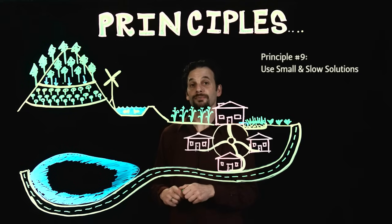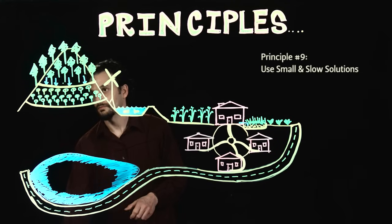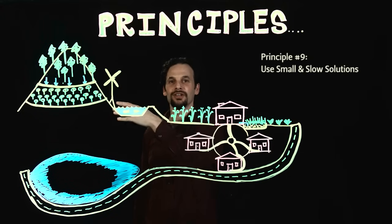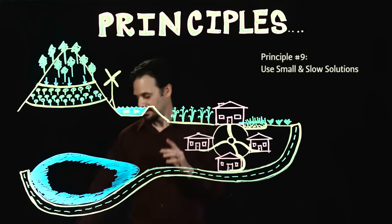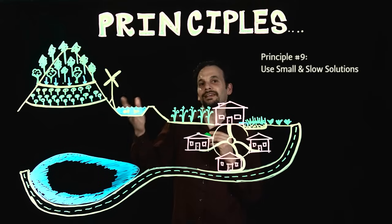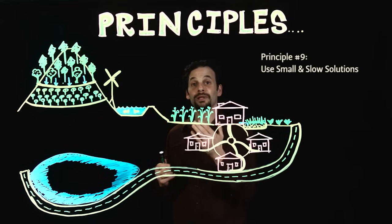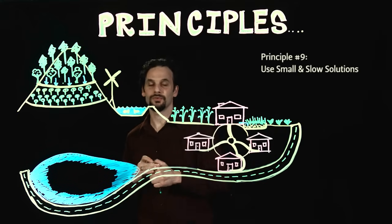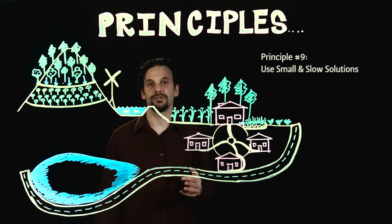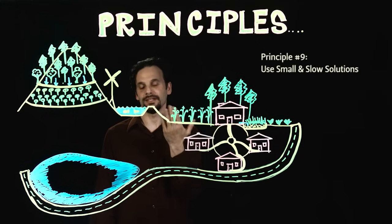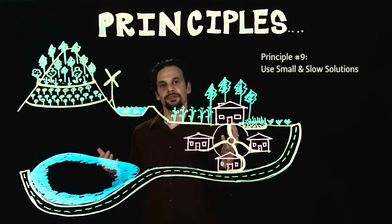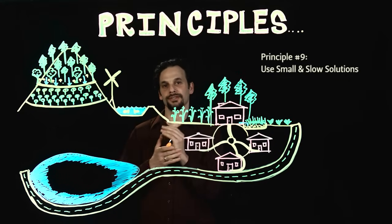Principle 9 is Use Small and Slow Solutions. I've gone ahead and harvested some of the trees on the forest edge to use for fence posts, and replaced them with nut trees that will start bearing in about 10 to 12 years and will then live for hundreds of years. I've planted new trees which will be new fence posts when these ones rot. I've also inoculated edible mushrooms into the stumps of the trees I cut, which will produce for years and then spread to others with the fallen wood. These are all examples of playing the long game using the small and slow design principle.